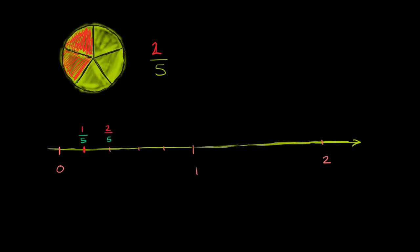And I could keep going. This right over here should be 3 over 5. This right over here — I've gone 1, 2, 3, 4 out of the five sections towards 1, so I could call this 4 fifths. And then I could call this right over here — I've traveled five out of the five equal sections — so I could call this right over here 5 over 5.